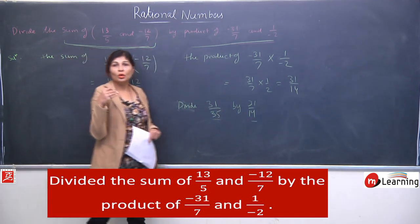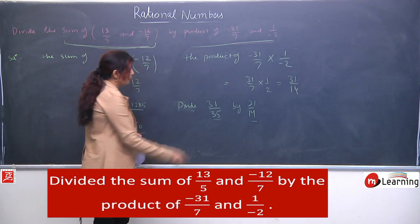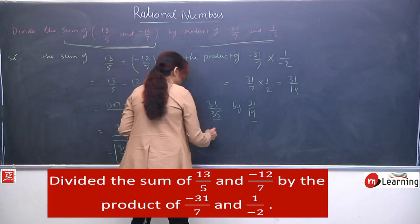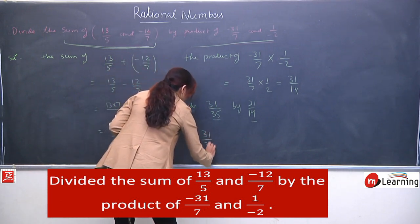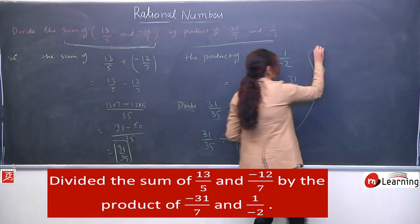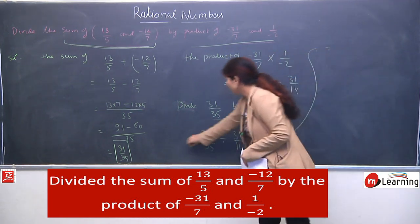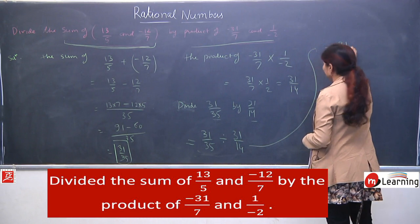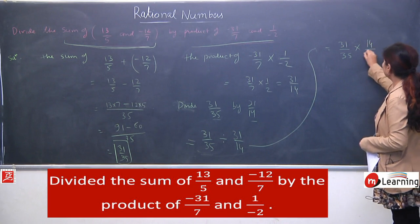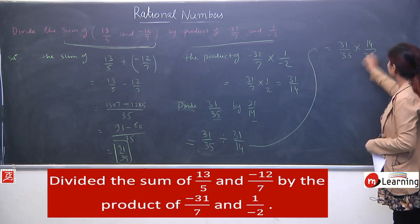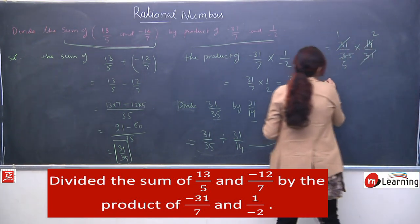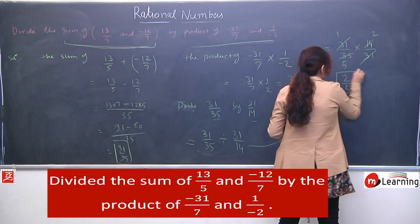Yeh aapko likhna nahi hai — just to inform you, just to make you aware that hum ne kya kiya: ye term aur ye term aise convert kar di. Ab divide hai, toh hum simple division karenge: 31 by 35 ko divide karna hai by 31 by 14. To we will convert divide into multiplication — the second term will reciprocate: ye ho jayega 14 by 31. 31 se 31 cancel ho jayega. 7 twos are 14, 7 fives are 35 — so your answer will be 2 by 5.